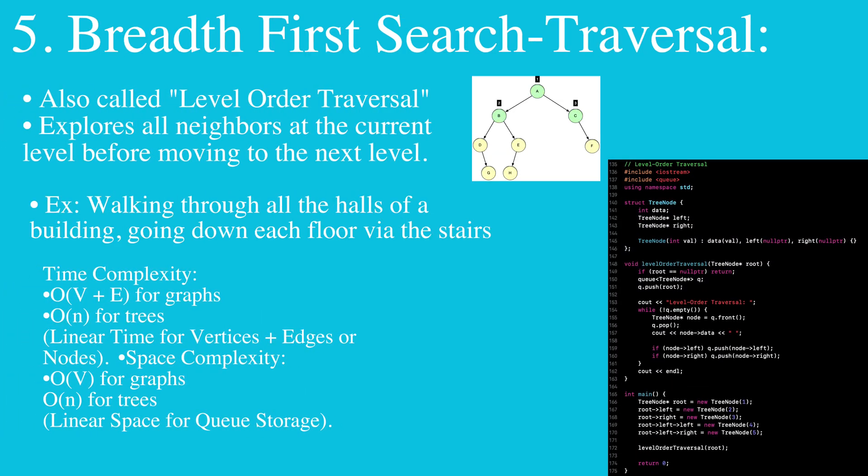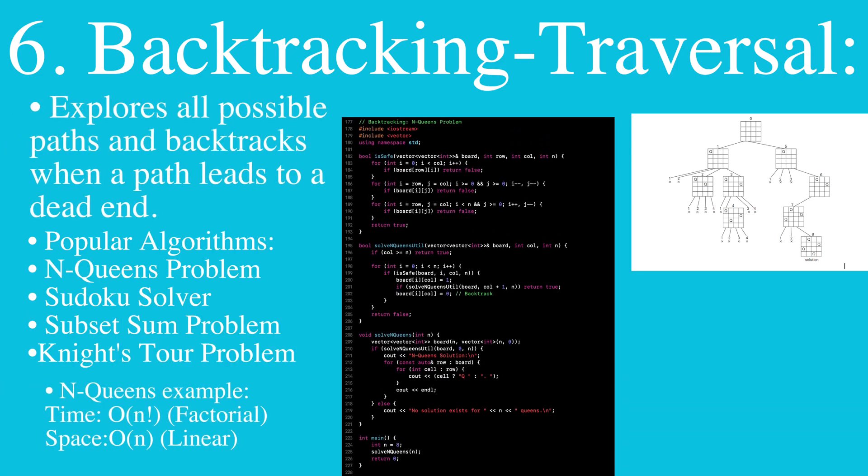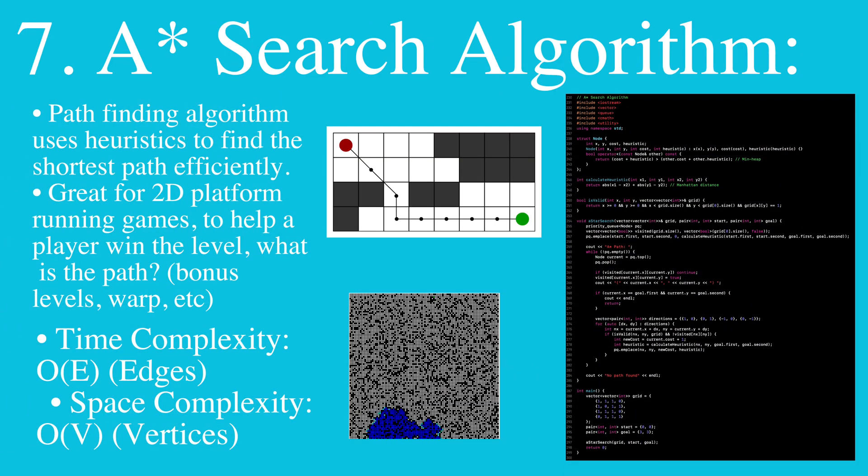Then we have breadth-first search traversal, which explores all the neighbors at the current level before moving to the next level. Then we have backtracking traversal, where we explore all possible paths and backtrack when a path leads to a dead end. Then we have A-star search algorithm, which uses heuristics to find the shortest path.